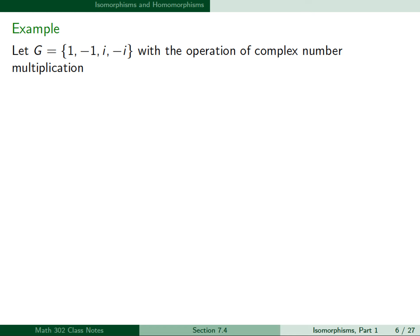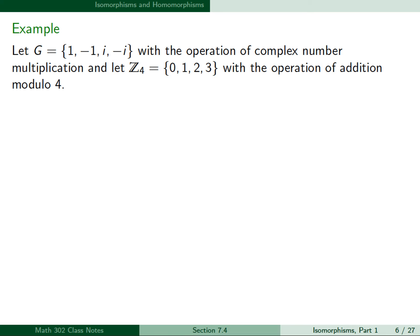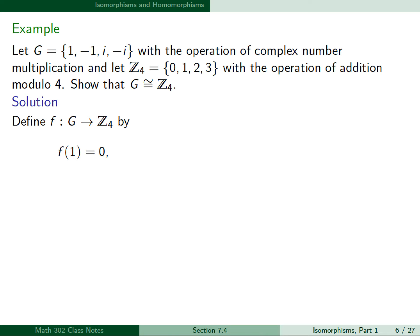For our first example, let G be the group consisting of the complex numbers {1, -1, i, -i} with the operation of complex number multiplication. Let Z4 be the integers mod 4, {0, 1, 2, 3}, with the operation of addition modulo 4. We want to show that G is isomorphic to Z4, so we define f from G to Z4 by: f(1) = 0, f(-1) = 2, f(i) = 1, and f(-i) = 3.